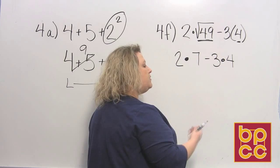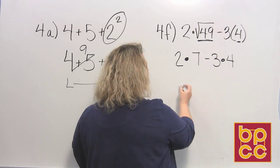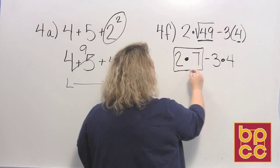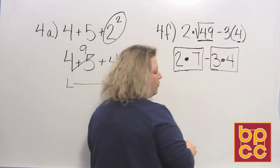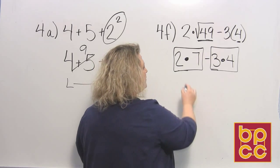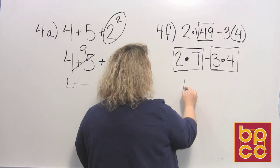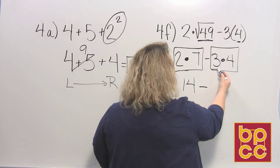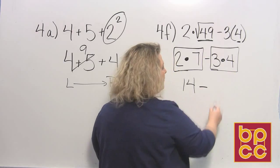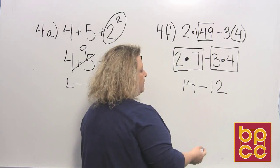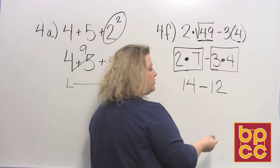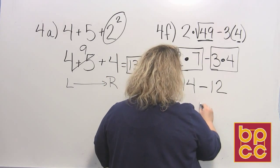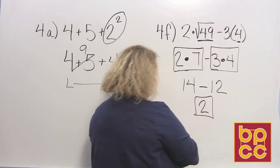When I look from left to right, I see multiplication here and also multiplication here, so I want to make sure I do my multiplying first. That would be 2 × 7, which is 14. Bring the subtraction sign down because I'm not ready to use it yet. Then 3 × 4, which is 12. Now I've gotten down to nothing but subtraction, so that's my last step. 14 - 12 leaves 2, so the final answer to that problem is 2.